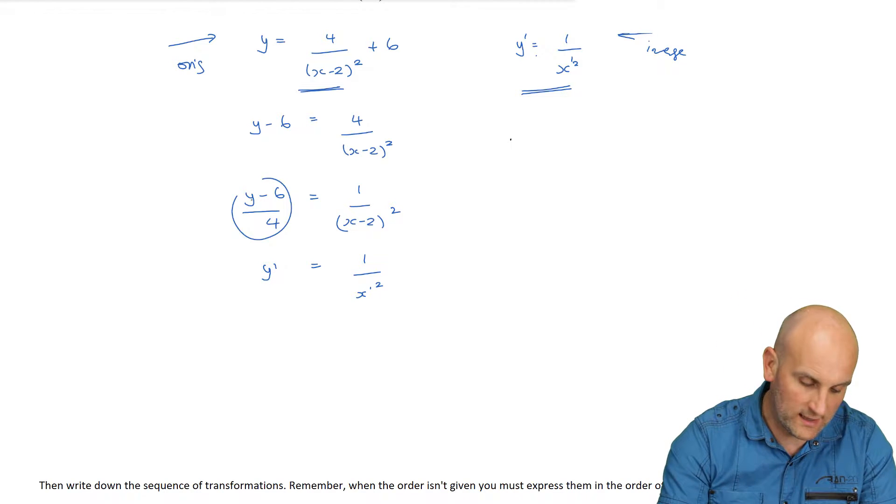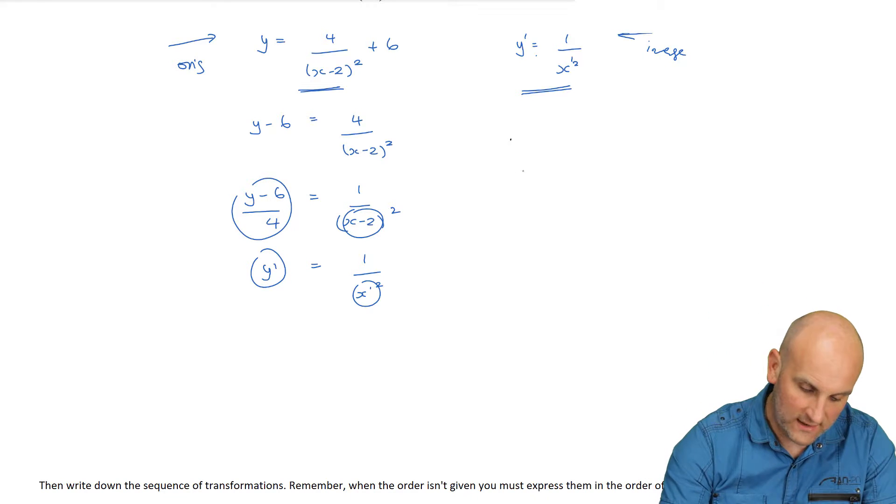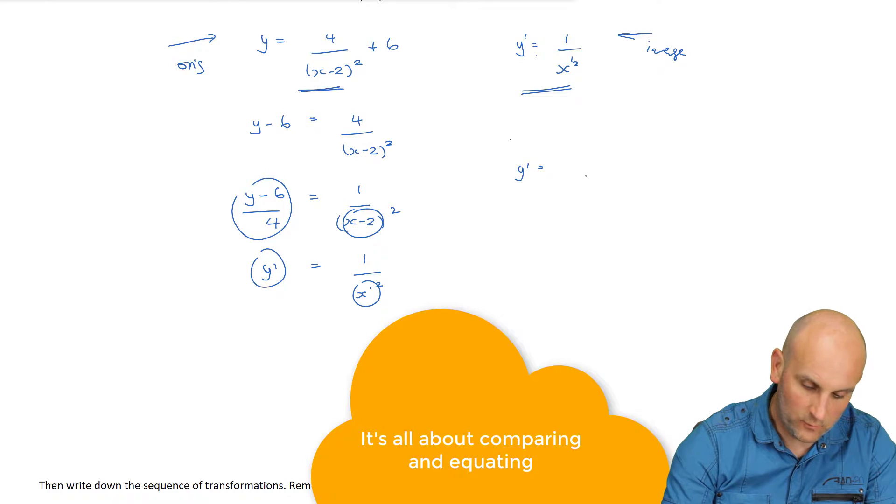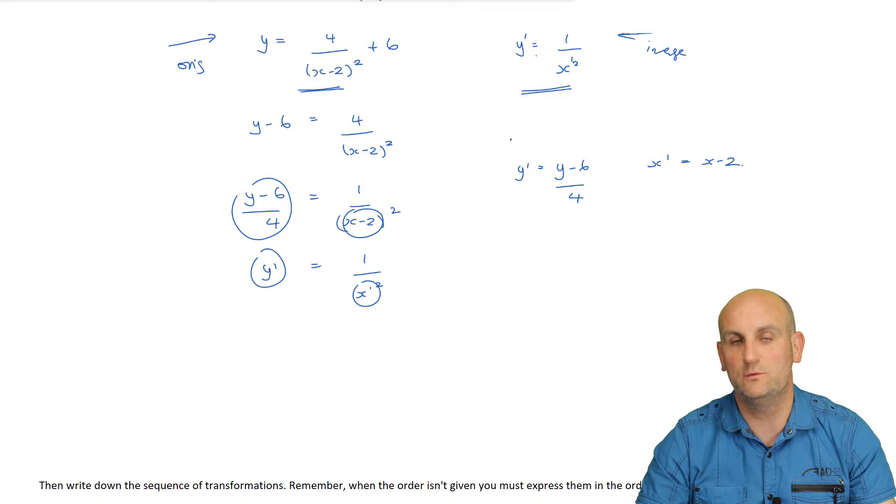So I'm going to minus 6 from both sides. We get y - 6 is equal to 4/(x - 2)². And then divide both sides by 4. So we get (y - 6)/4 = 1/(x - 2)². And if we remember, we are trying to compare that with y' is equal to 1/(x')². Now that dashed and squared makes it look like a 12 notation. We have to be very, very careful here. Why are we trying to do this? Well, we're trying to equate those. And in this situation, x' and that x - 2. Tick. Right. So we have y' is equal to (y - 6)/4. And we have x' is equal to x - 2.